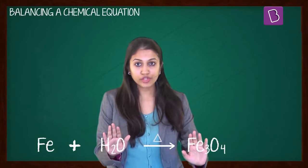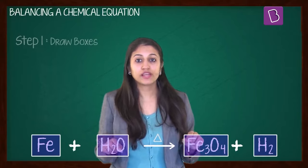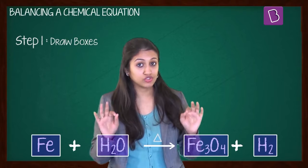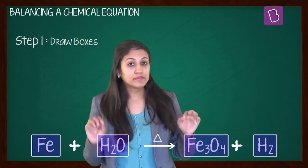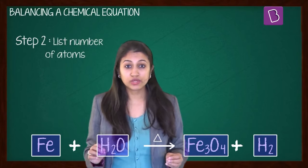Let's look at another example. Fe plus H2O giving you Fe3O4 plus H2. Now to balance this, first you drop boxes around the chemical formulas. And you cannot change anything inside the boxes of this equation.